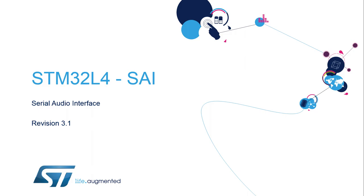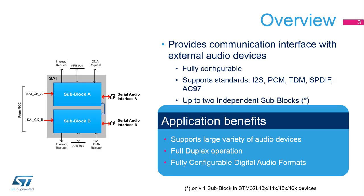Hello, and welcome to this presentation of the STM32 Serial Audio Interface. I will present the features of this interface, which is used to connect external audio devices. The Serial Audio Interface, or SAI, is integrated in STM32 products to provide an interface for communicating with external audio devices, such as amplifiers, ADCs, DACs, audio codecs, and audio processors.